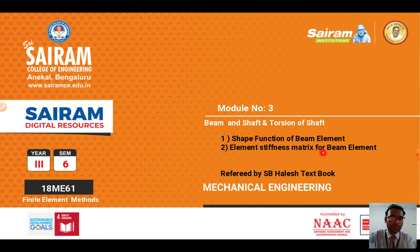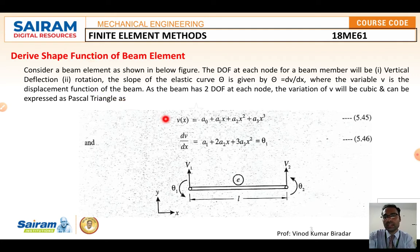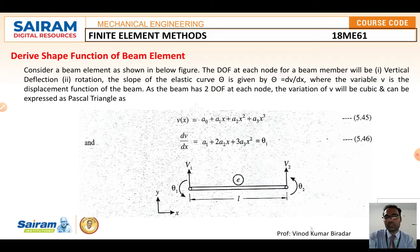To solve for the element stiffness matrix, we first need to know the shape functions N1, N2, N3, and N4. Note that in the exam, the Hermite shape function — denoted H1, H2, H3, H4 — is different from the standard beam shape function denoted N1, N2, N3, N4. Don't be confused between the two; the Hermite shape function derivation is more important for examination purposes.